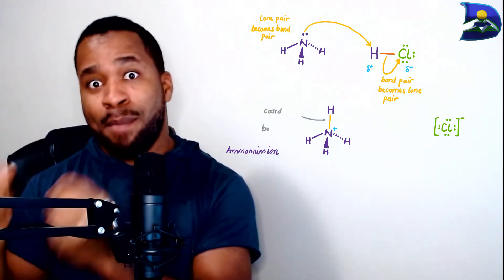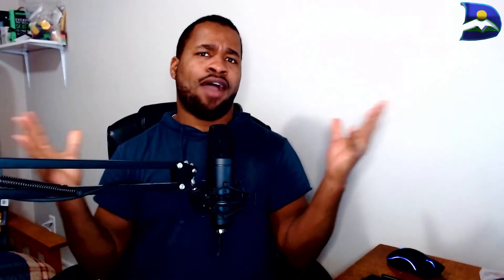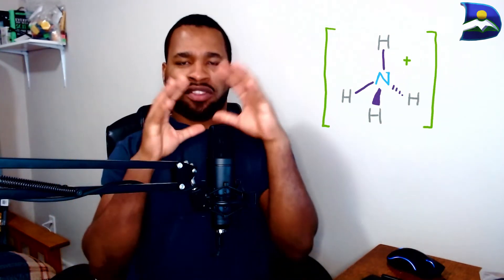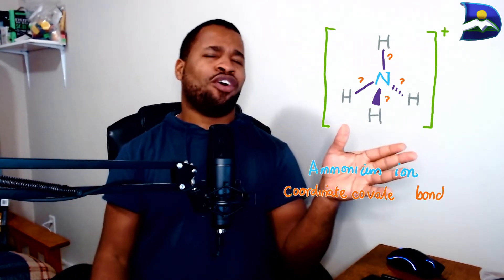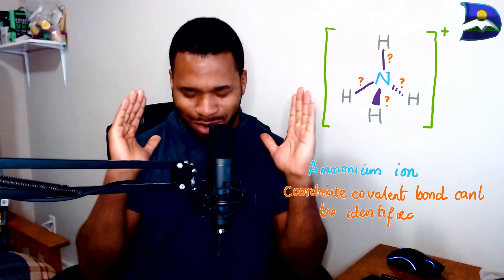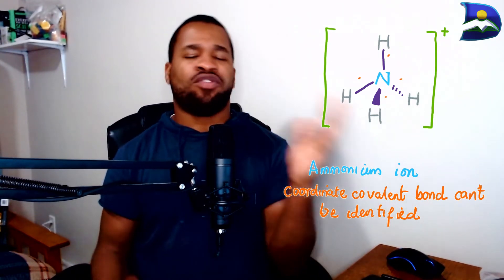So the nitrogen's lone pair in ammonia is involved in forming a bond with the hydrogen cation, resulting in the formation of a coordinate bond. Forming the ammonium ion is quite interesting because you can't distinguish those particular bonds — they are indistinguishable. The overall formal charge, which depends mainly on nitrogen, becomes positive.